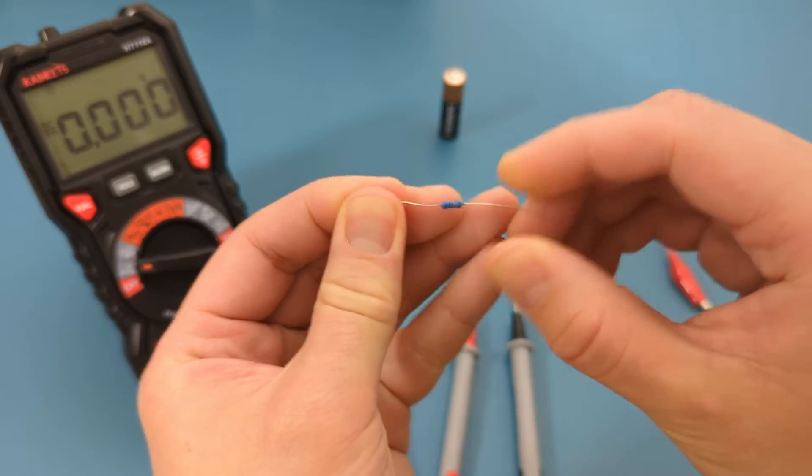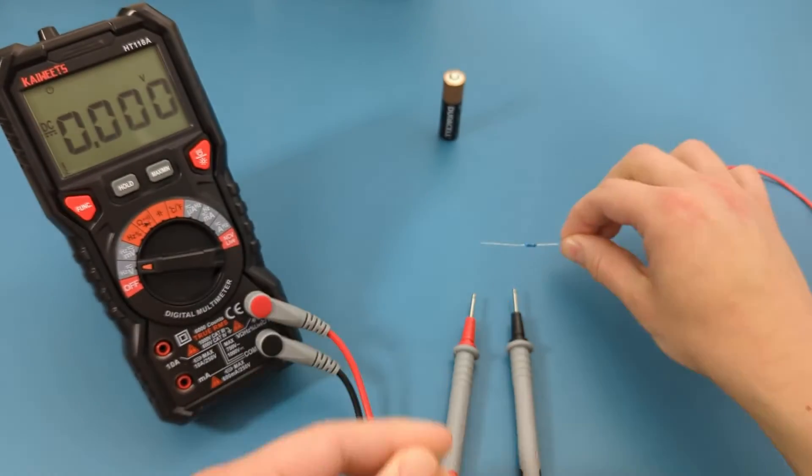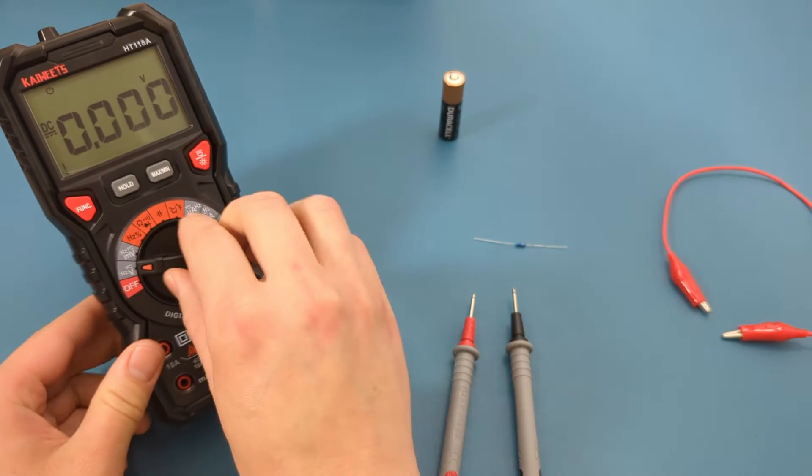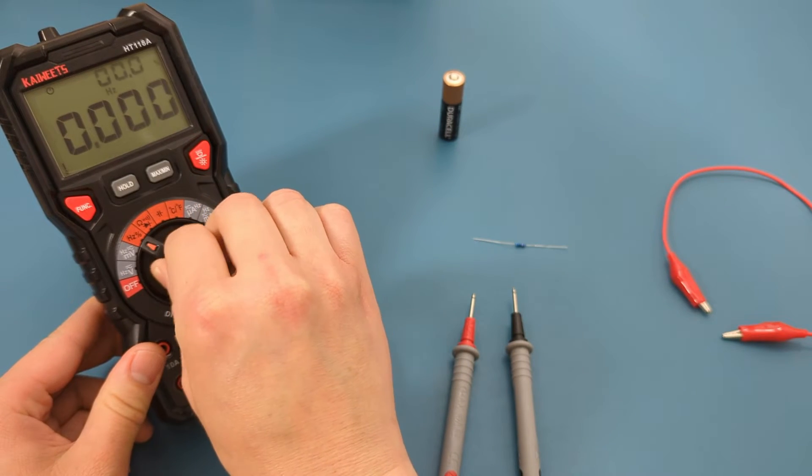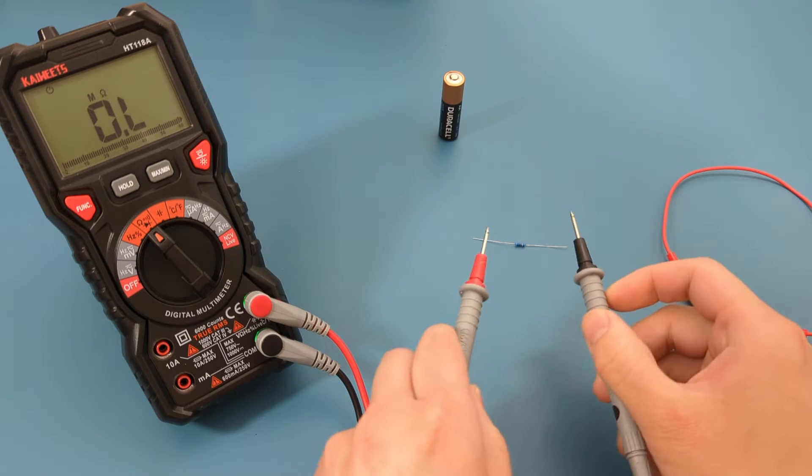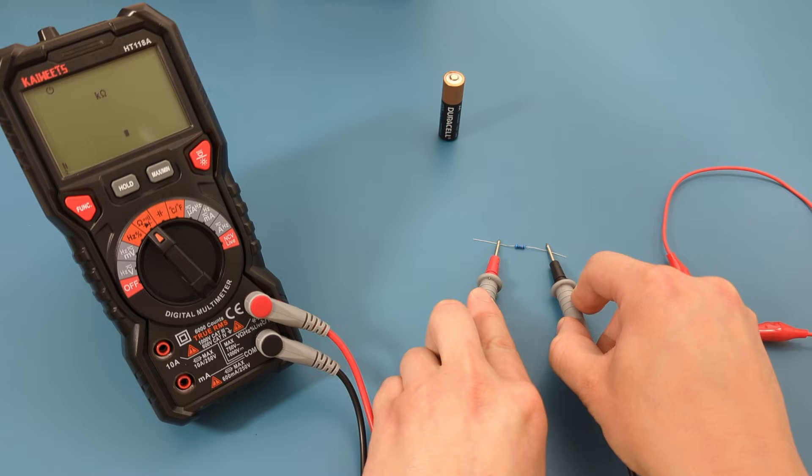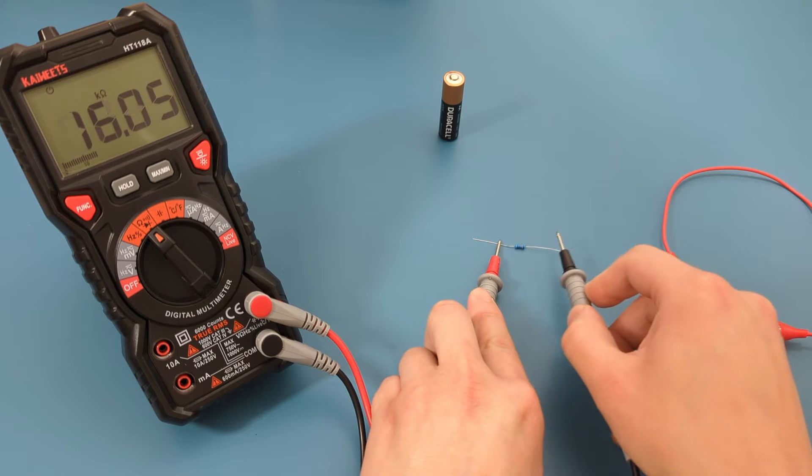The second test is to measure the resistance of this resistor. Turn the dial to the ohm and continuity setting. The reading shows around 10,000 ohms, which is expected.